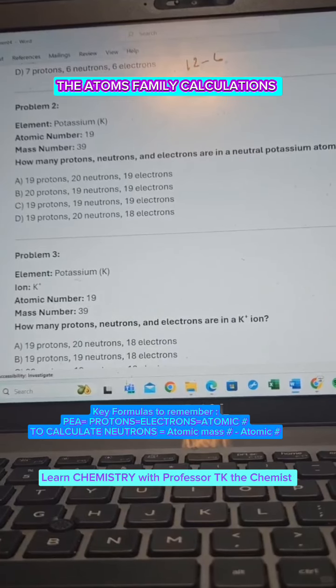Okay, so now if we look at number two, it says how you're calculating the protons, electrons, and neutrons in a neutral potassium atom. When they say neutral, notice neutral means we're not talking about the charge. But if you look at number three, this one says in a potassium ion. There is a difference in terms of how you're going to do it.